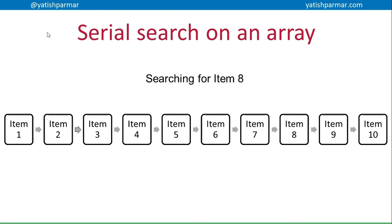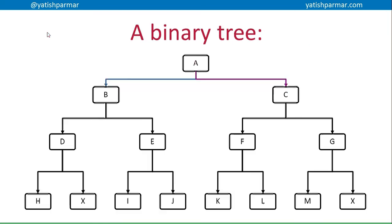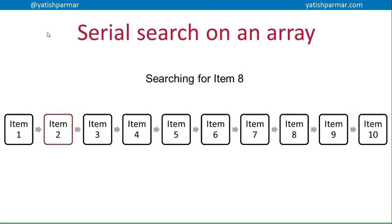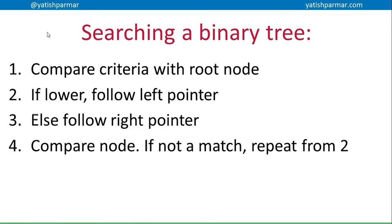Going back to looking at a linked list or an array — when you search through an array or a linked list, you tend to go from item to item to item until you find the one you're looking for. This is not the most efficient way. If you have lots and lots of data items, it will take a long time to go through each single item to find a match. With a binary tree, it's a bit easier and quicker to search.